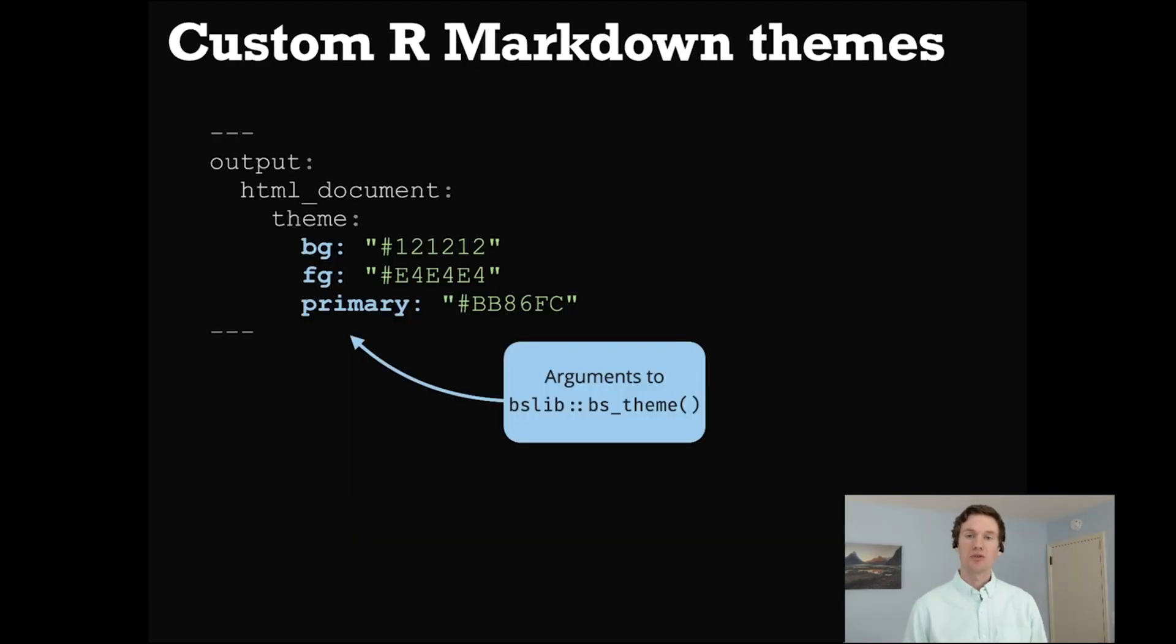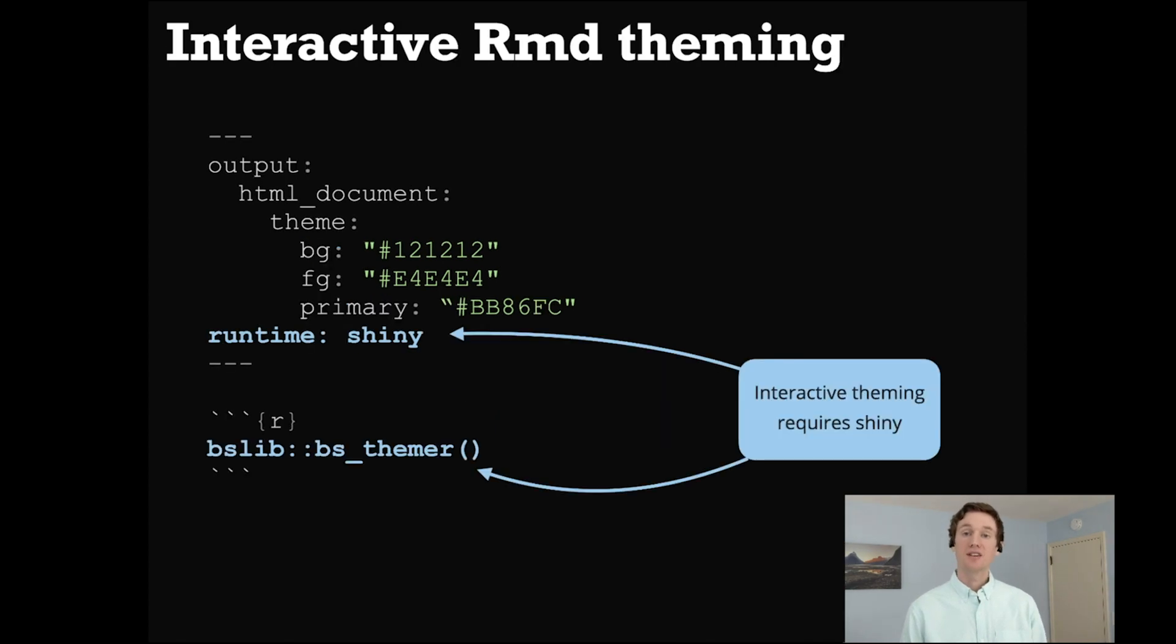Now, if you'd like to use these theming tools with R Markdown, the first thing to know is that you can pass these theme settings into the theme parameter of an HTML document. In addition, if you'd like to theme your document with the interactive theming tool, you'll have to first add a Shiny runtime to your document's YAML matter and then call the bs_themer function inside of the server-side code.